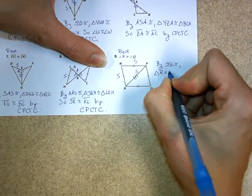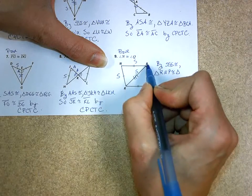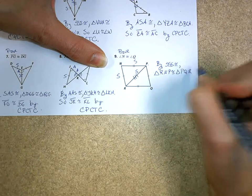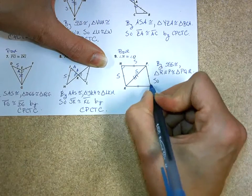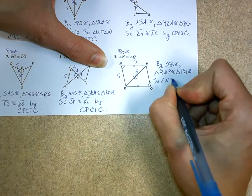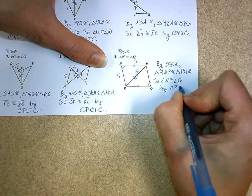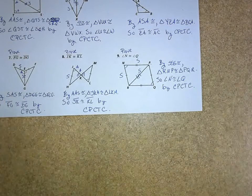RNP, is congruent to triangle. If I go RNP, it's going to be PQR. So what do we know? Angle N is now congruent to angle Q by corresponding parts of congruent triangles are congruent. All right, now let's go ahead and do the proofs together on the other side.